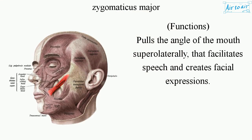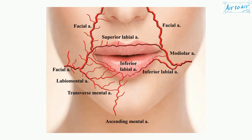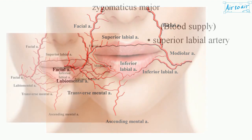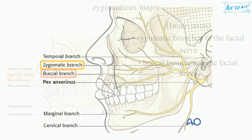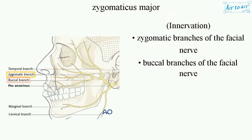Functions: pulls the angle of the mouth supralaterally, which facilitates speech and creates facial expressions. Blood supply: superior labial artery. Innervation: zygomatic branches of the facial nerve and buccal branches of the facial nerve.